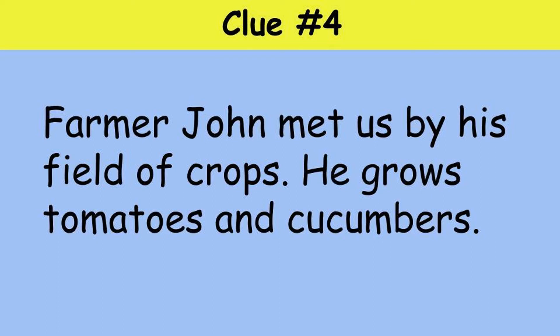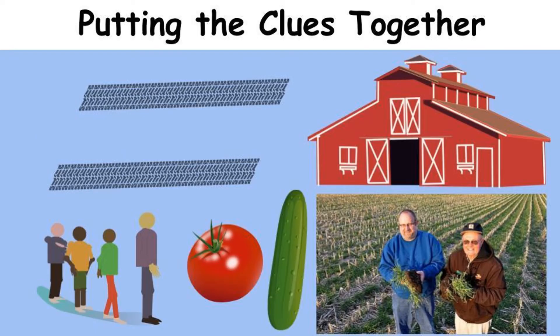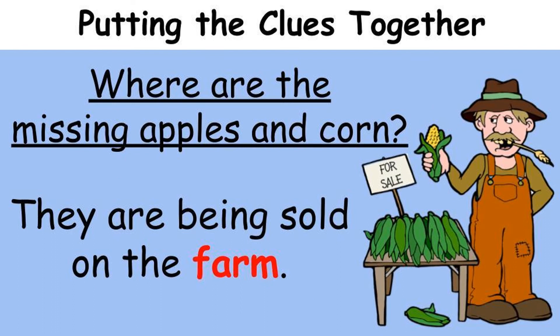I bet you know exactly where the missing corn and apples are now. If you weren't able to visualize where the corn and apples went, we've put the clues together here in a picture. We have large tire tracks, a big red barn, people standing in line, and the crops we saw were tomatoes and cucumbers with farmers there waiting to greet us. So where did the missing apples and corn go? That's right — the missing apples and corn ended up going to the farm. The farmer was selling them to the community. Have you ever been to a farm to pick up some fresh fruits and vegetables? I love to go every summer to pick up fresh corn and tomatoes. Yum!